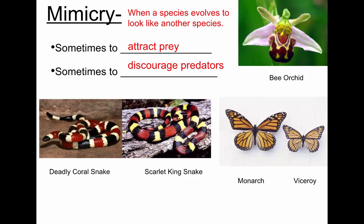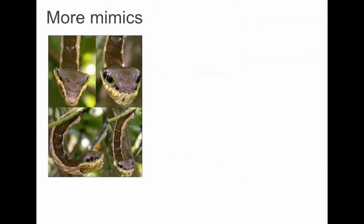This is a bee orchid — it's a flower, but its petals have adapted to have a coloration that makes it look like a bee. Bees think it's another bee and attempt to mate with it, even though it's just a petal of a flower, and in the process they get pollen on them and help to pollinate the plant.